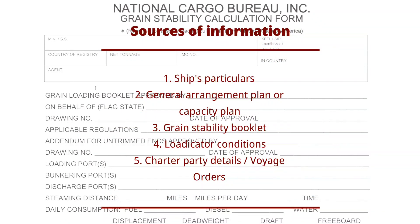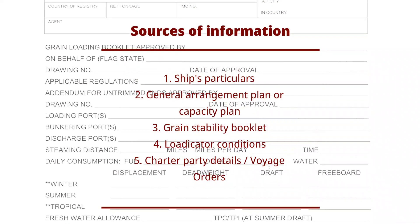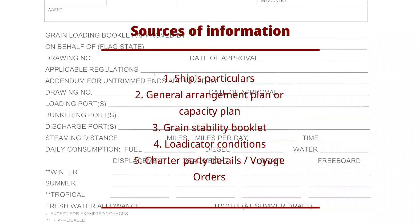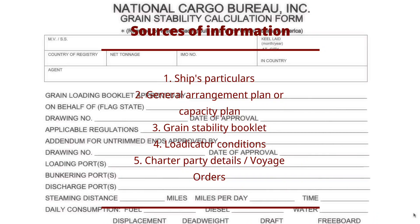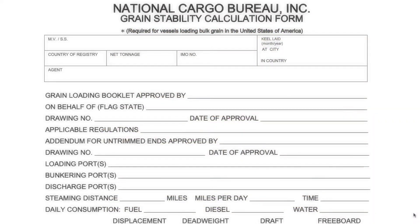The NCB form is filled up using the following sources of data: number one, ship particulars; number two, capacity plan and general arrangement plan; number three, grain stability booklet and grain loading manual; number four, loadicator reports; and lastly, charter party details or voyage orders. Most of the form is completed using the above, so keep these items handy.